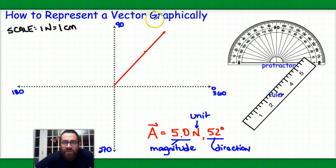I can call this vector A. Basically, I should recognize that its length is appropriate to its magnitude. So based on this scale, it's 5 units long, and it's at 52 degrees.